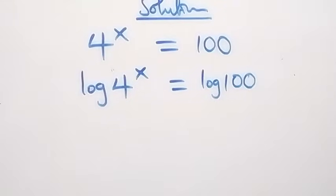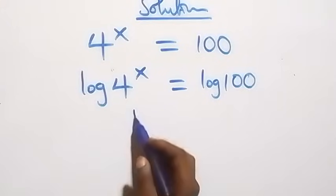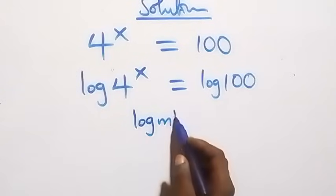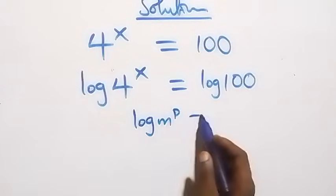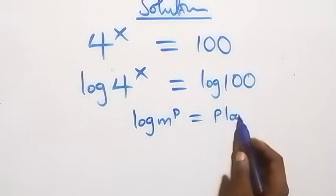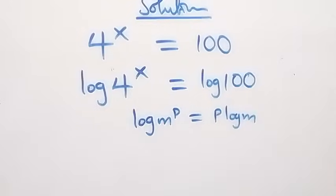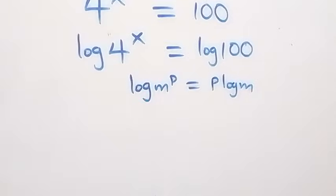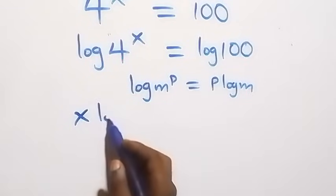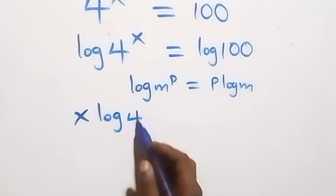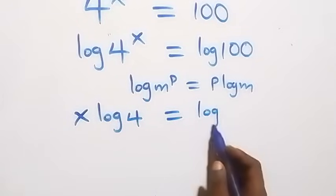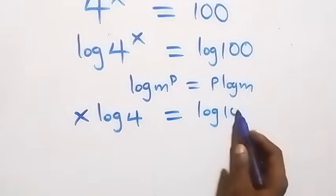The next step: we apply the power rule of logarithms, where log m raised to power p is the same as p log m. So what we have here becomes x log 4 equals log 100.